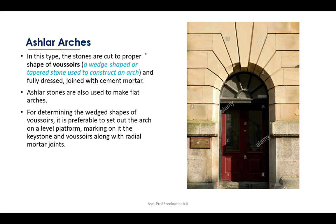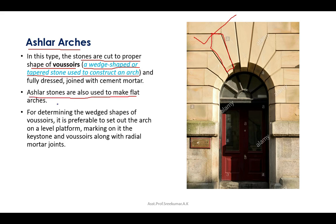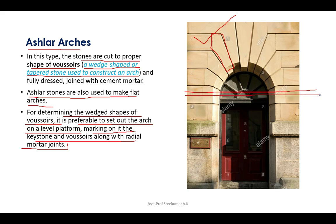The second type is the ashlar arch. In this type, stones are cut to the proper shape of a voussoir — a wedge-shaped or tapered stone used to construct an arch. Ashlar stones are also used to make flat arches. For determining the wedge shape of voussoirs, it is preferable to set out the arch on a level platform, marking on it the keystone and voussoirs along with radial mortar joints.